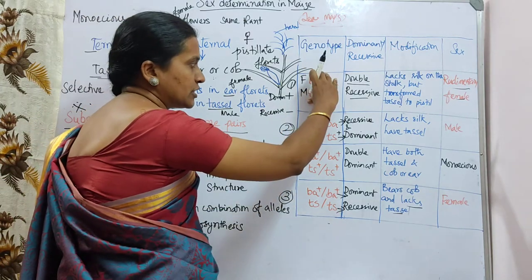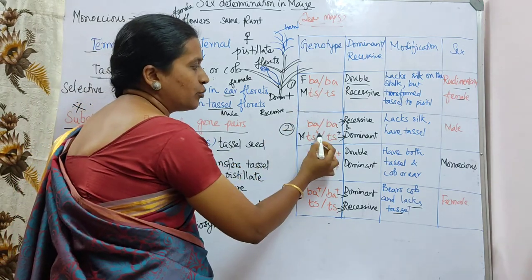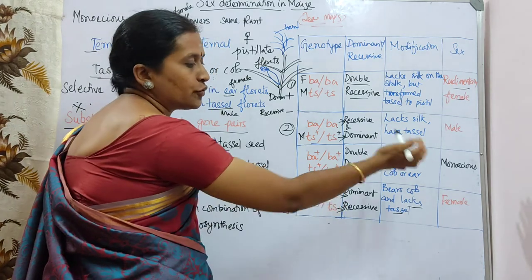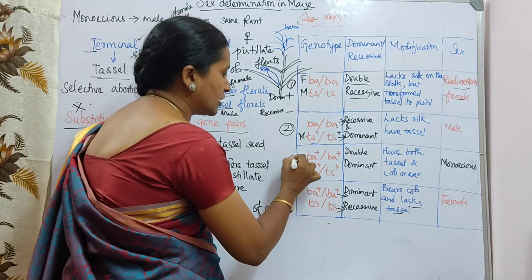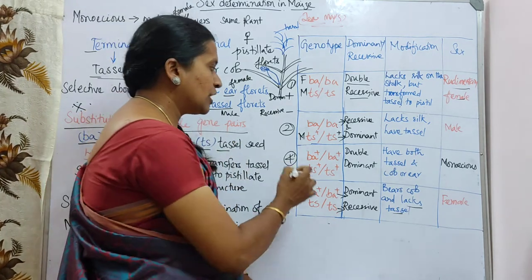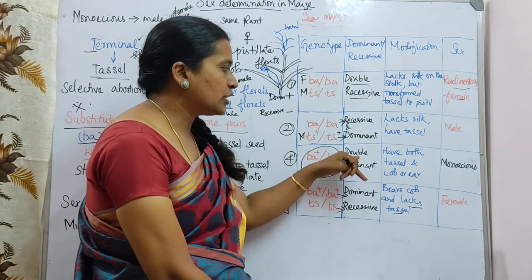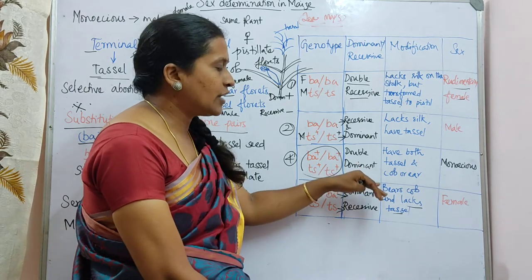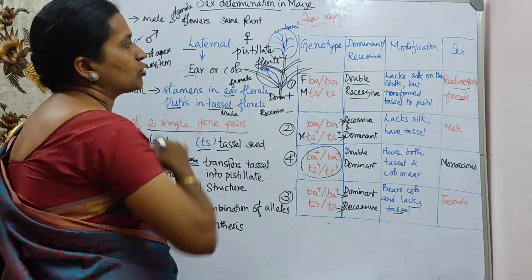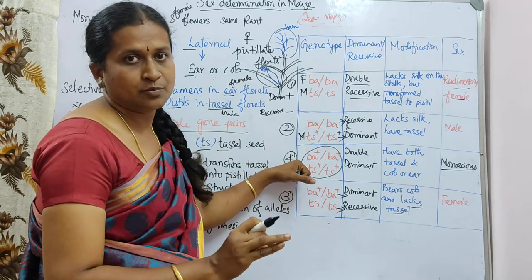So we have seen: double recessive gives rudimentary female; male dominant gives male flowers; female dominant gives female flowers. The fourth condition is the most important — both genes are dominant, called double dominant. Both tassel and cob are present, and hence this condition is monoecious.